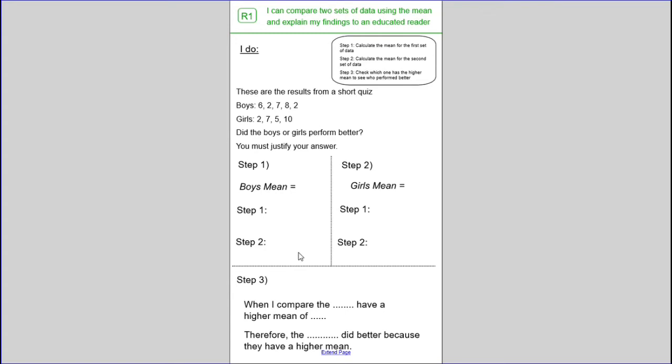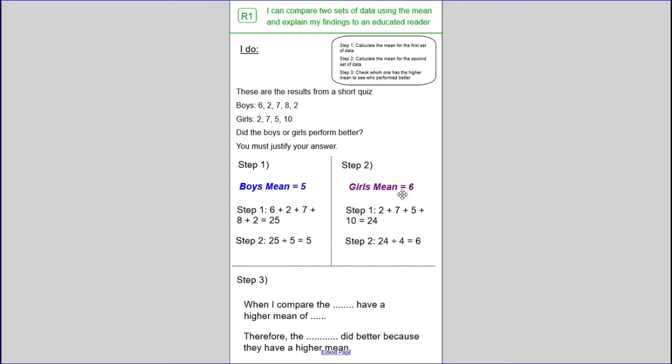So remember to calculate the mean, we must add up all of the numbers for step 1. And for step 2, we then need to divide by how many numbers there are. And in this case, there are 5 numbers. For step 2, we're then going to find the mean for the girls. So we're going to do the same thing to calculate the mean once again. So that means the girls have a mean of 6.